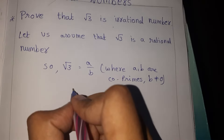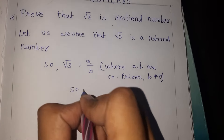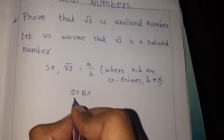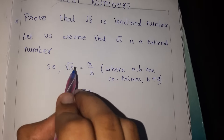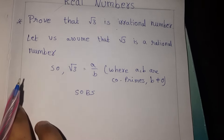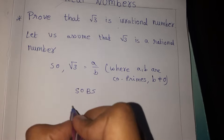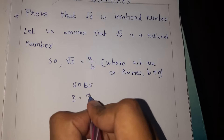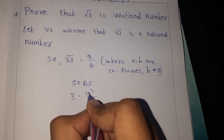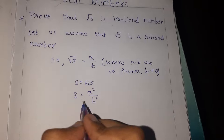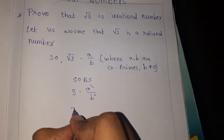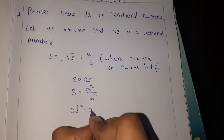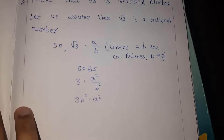We square both sides to cancel the root, giving us 3 equals a² by b².